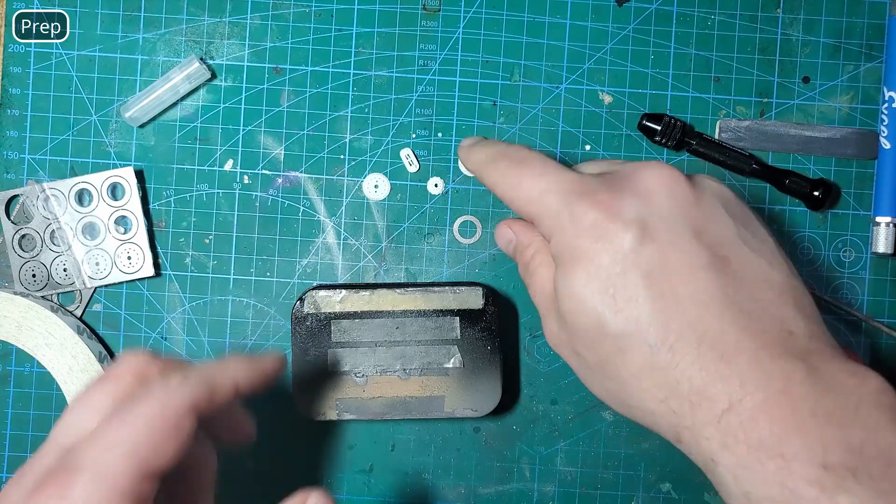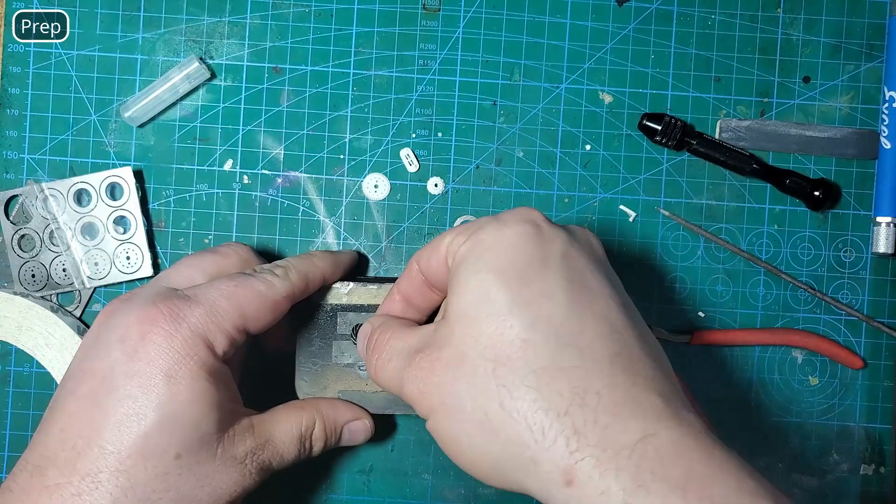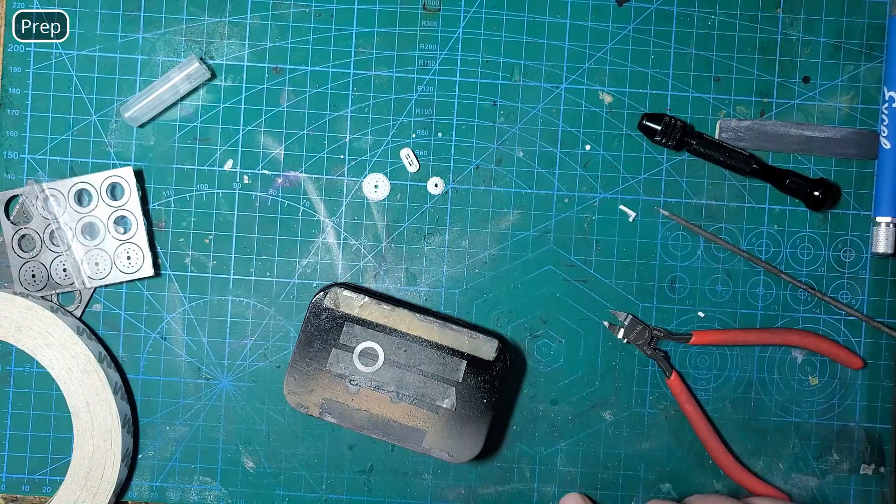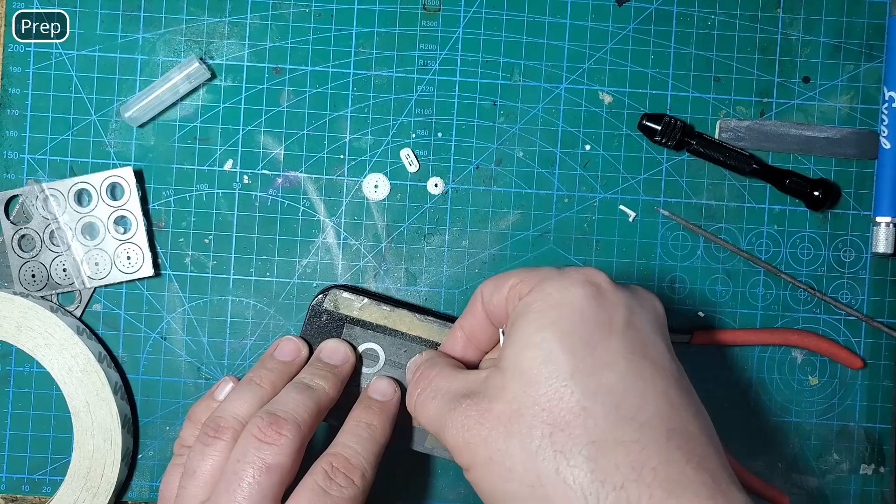To make these easy to paint I've just got an Altoid tin with some double-sided sticky tape and we're just going to mount these up to this Altoid box.